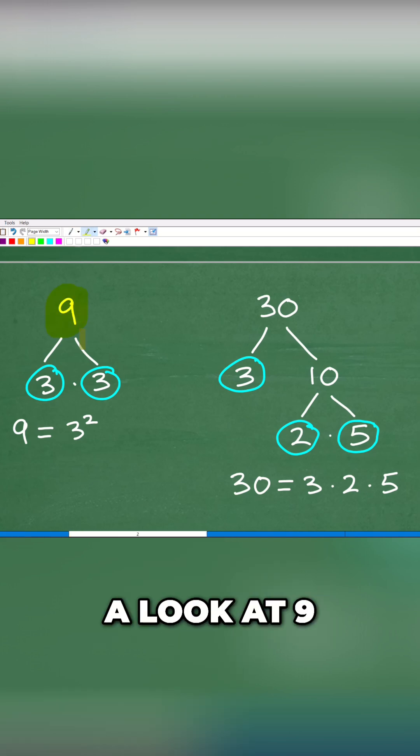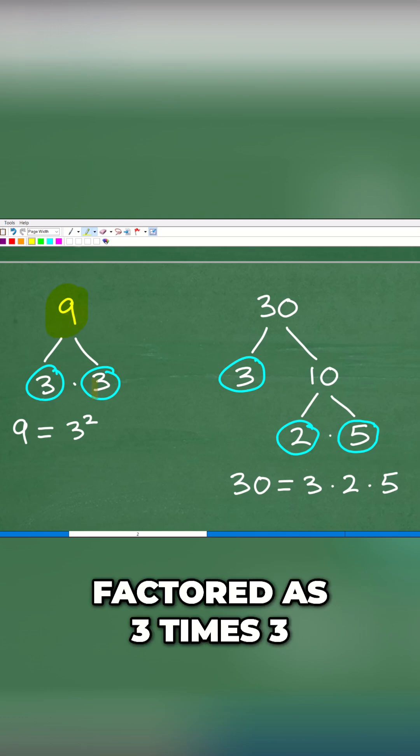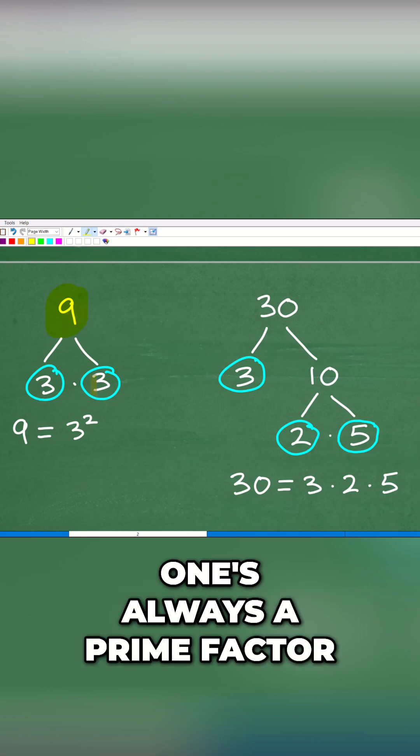Well, let's go ahead and take a look at 9. So you're going to factor 9. 9 could be factored as 3 times 3. 1 is always a prime factor, but we don't have to write that down.